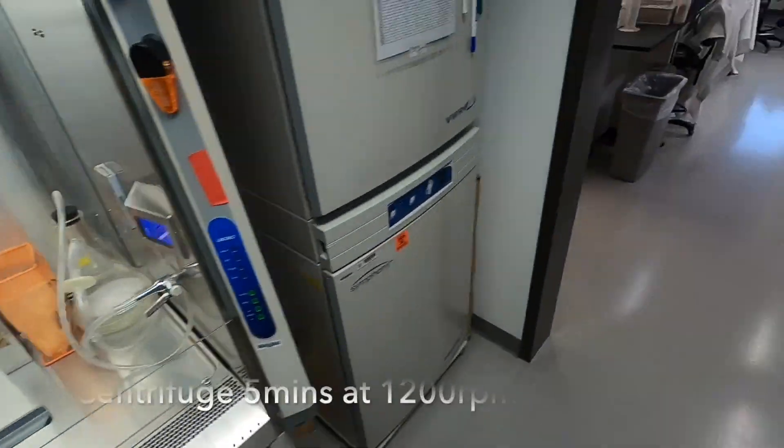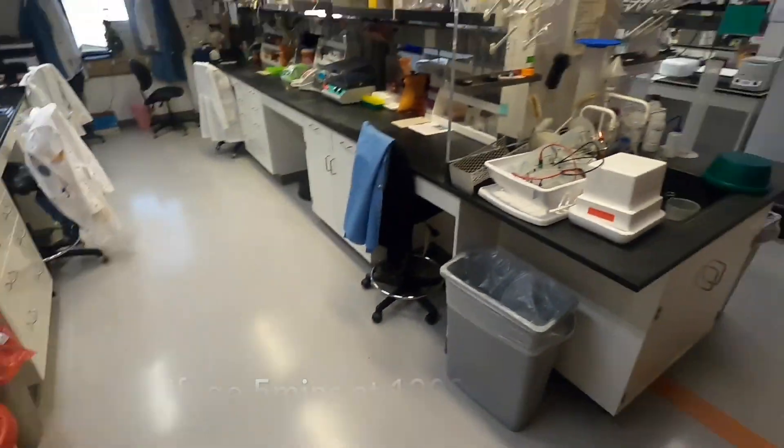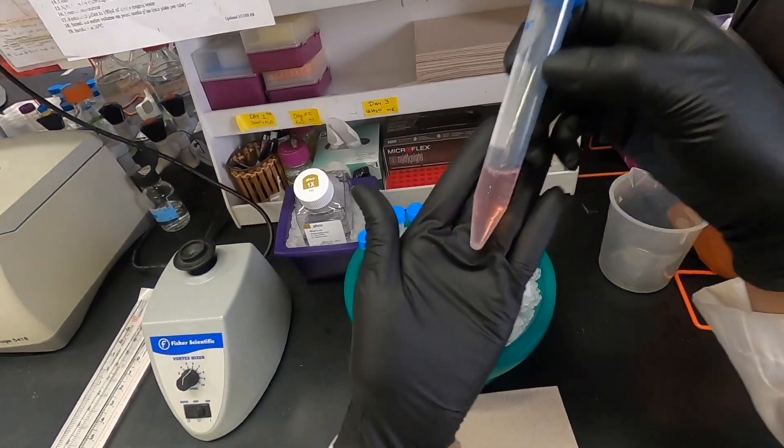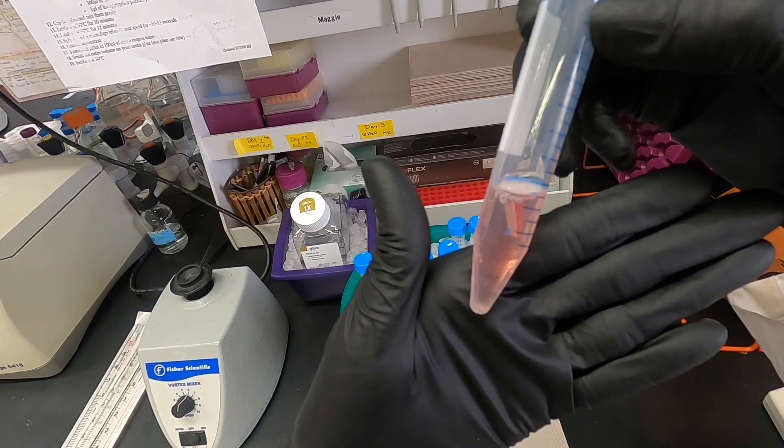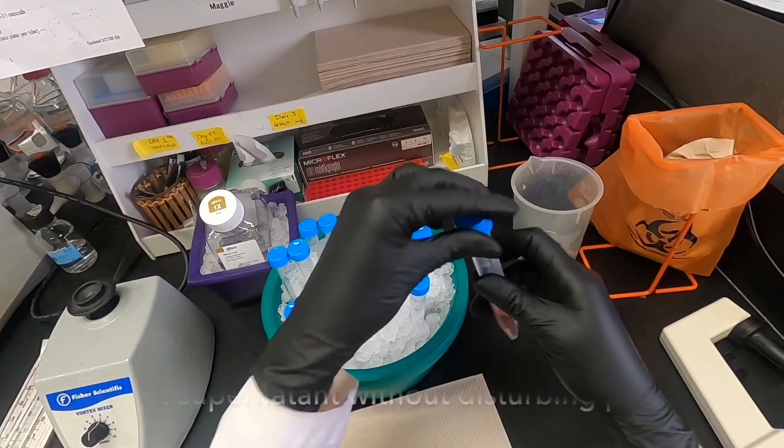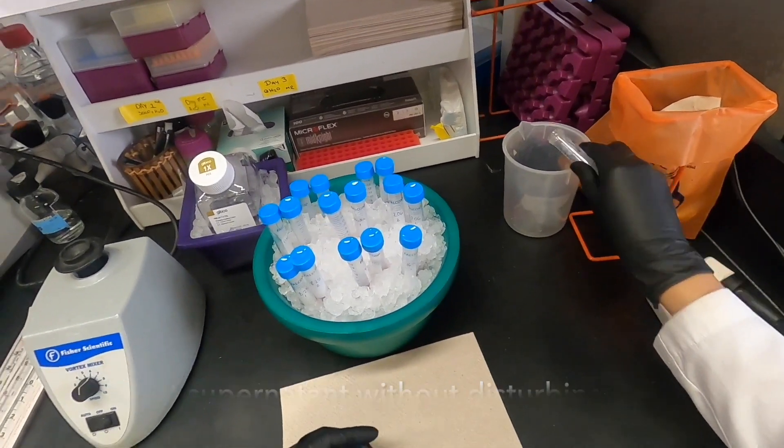Once all the wells have been transferred to tubes, we will centrifuge cells for 5 minutes at 1200 RPM. After the cells finish centrifuging, you can see there is a pellet at the bottom of the tube. Now we want to discard the supernatant after verifying that a cell pellet has formed.